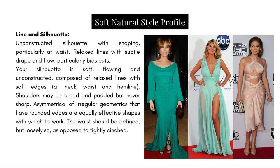Line and silhouette: the soft natural silhouette is soft, flowing, and unconstructed, composed of relaxed lines with soft edges at the neckline, waist, and hemline. Shoulders may be broad and padded but never sharp. The waist should be defined, but loosely, as opposed to tightly cinched. In these images, there's a relaxed draping — not adhering to the body in a strict way, but with a little space between the garment and wearer while following her curves. Fabrics should flow and have a sense of movement — nothing strict or rigid, nothing too heavy.